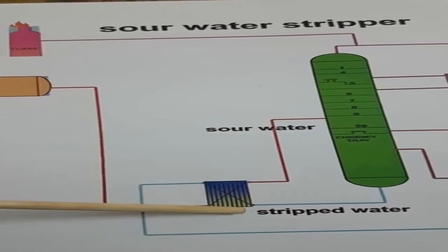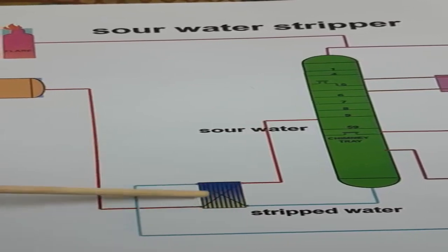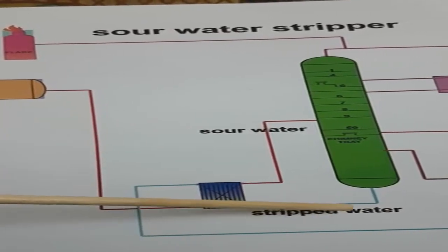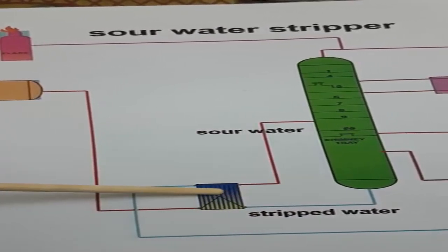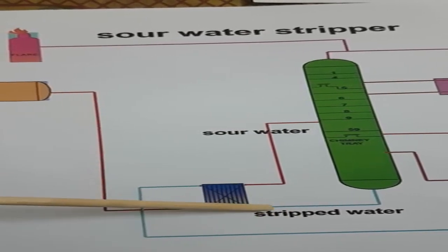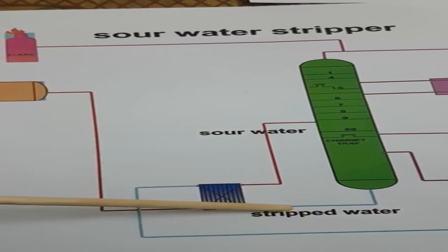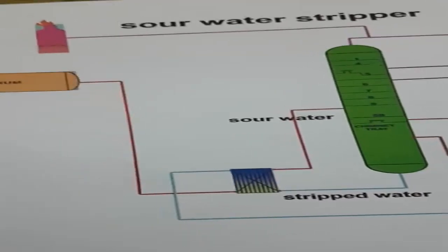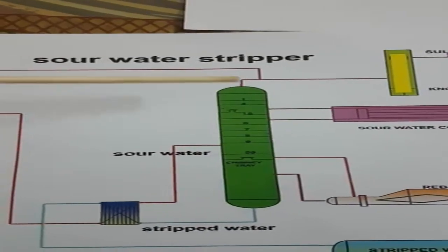Instead of using two separate heat exchangers — one to heat the sour water and another to cool the strip water — we use one interchanger. Strip water enters from one side and sour water from the other. The high temperature of the strip water is transferred to the sour water, and the cold temperature of the sour water is received by the strip water. Both temperatures are substantially interchanged. That is why we call it the interchanger.